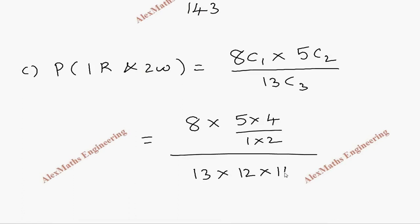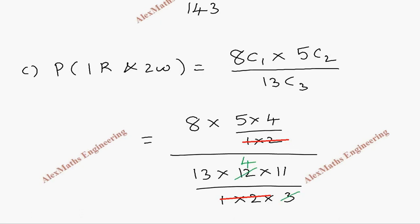13C3 is 13 into 12 into 11 by 1 into 2 into 3. We cancel the common terms 1 into 2 with 1 into 2, and also cancel 3 with 12 so it becomes 4, then cancel this 4 with 4. The remaining gives 8 into 5 equals 40 in the numerator and 143 in the denominator.